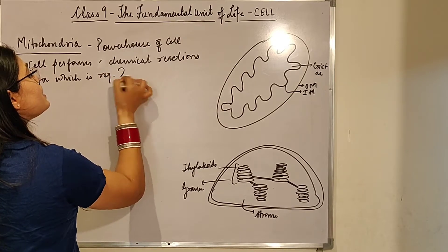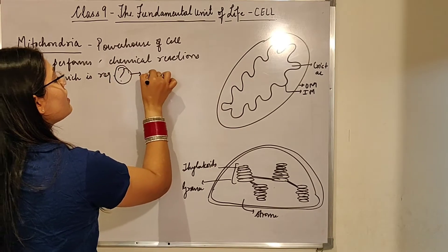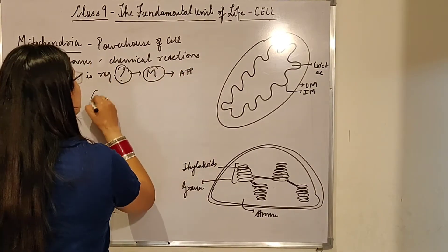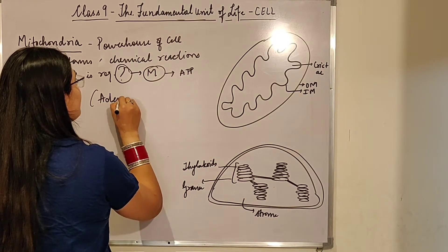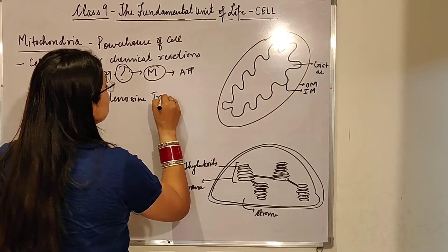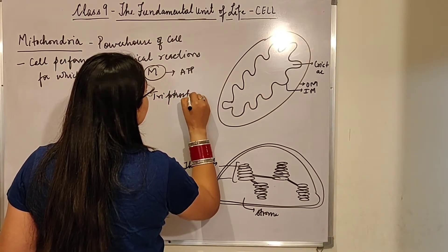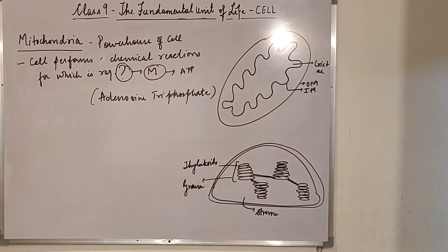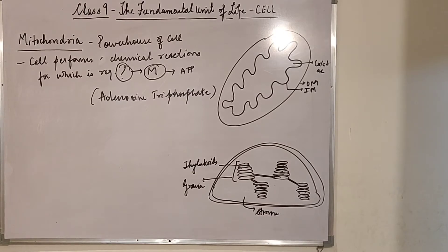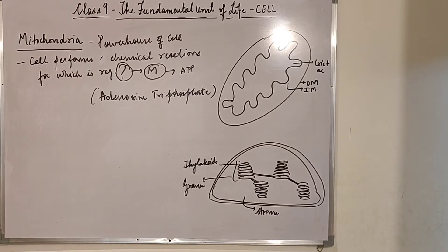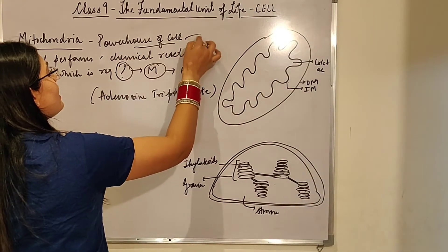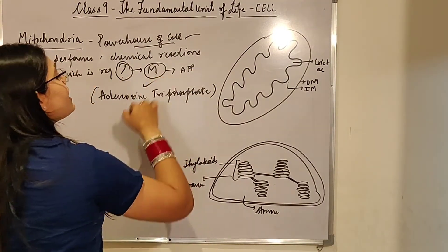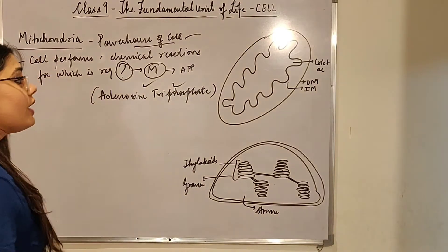The energy is given by mitochondria in the form of ATP — adenosine triphosphate. ATP is being generated inside the mitochondria, which helps in providing energy. This is the function — it is the powerhouse of the cell, giving energy in the form of ATP for the chemical reactions the cell performs.